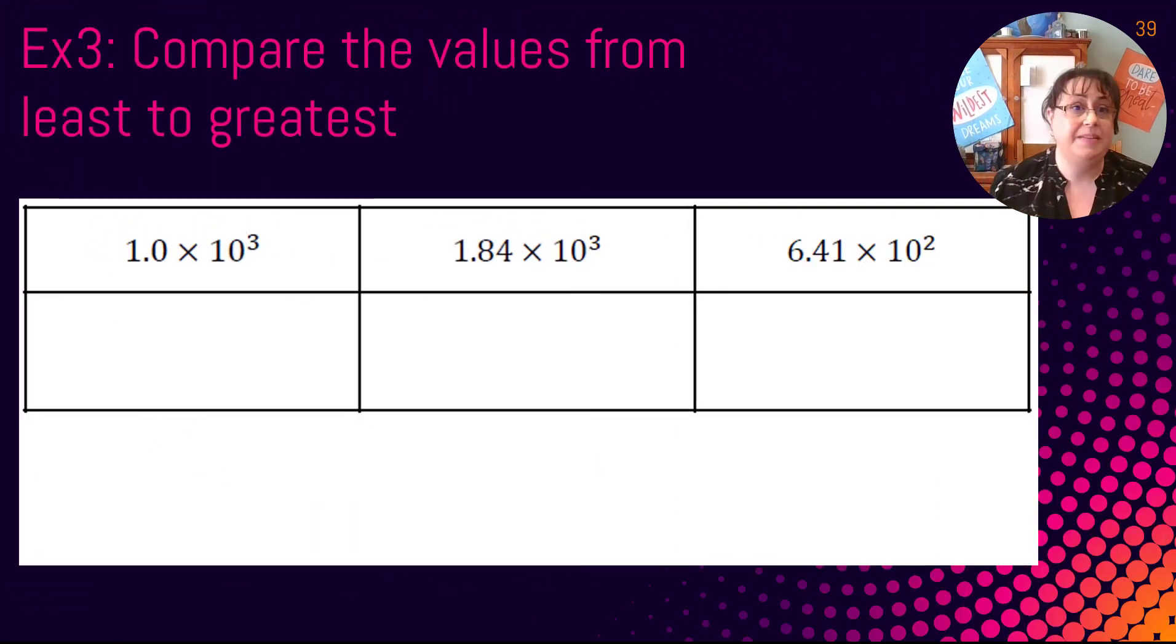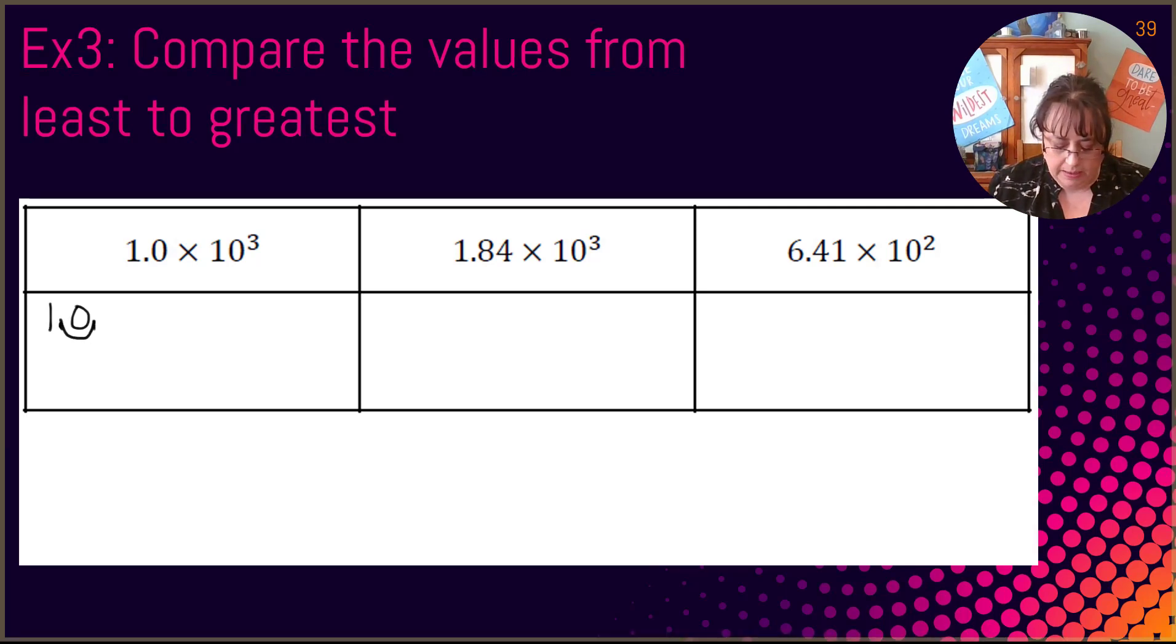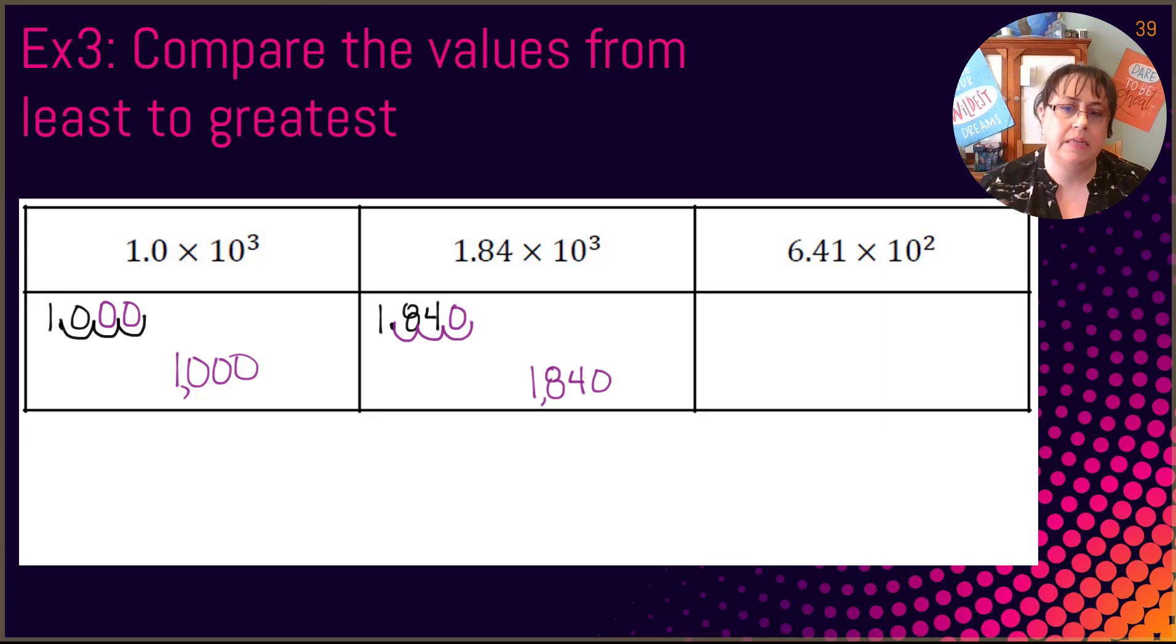So now when we want to compare, we need to be very careful about this. We can't make assumptions that just because I see the 3 or I see the 2, numbers are bigger or smaller. We have to take these into standard form in order to actually put them in order from least to greatest. So 1.0 times 10 to the third. 1.0. So I'm going to go 1, 2, 3. So I have to fill it in with 2 zeros. So my answer is 1,000. Then I have 1.84 times 10 to the third. 1, 2, 3. So now I have 1,840. So right now that's my biggest number. And it looks like this is going to be my biggest number because right now it has a 6 as a leading number. But let's just figure this out. 6.41. But this is only going two places. 1, 2. So my answer is 641. So that's actually my smallest number.